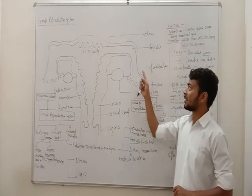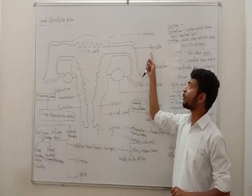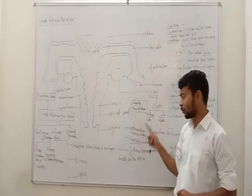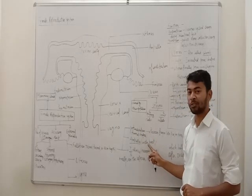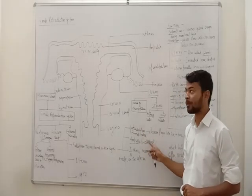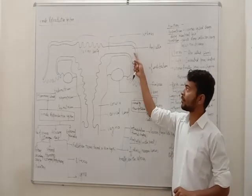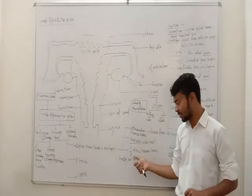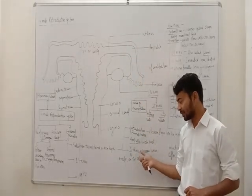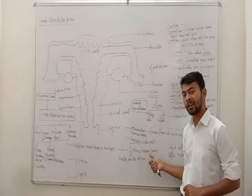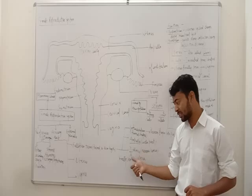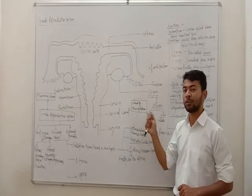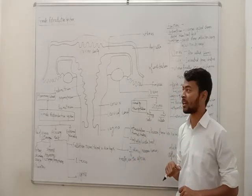The second, wider part of the fallopian tube is known as the ampulla. The ampulla is the wider region of the fallopian tube, and it finally opens into the third part which is the isthmus, which has a narrowed lumen. The isthmus region finally joins the uterine cavity.